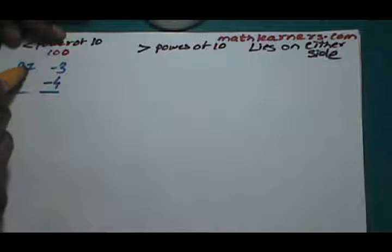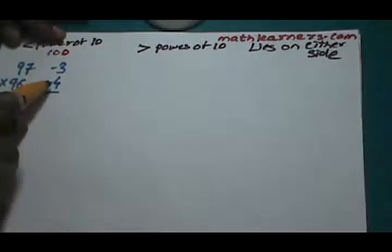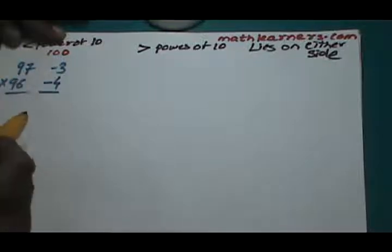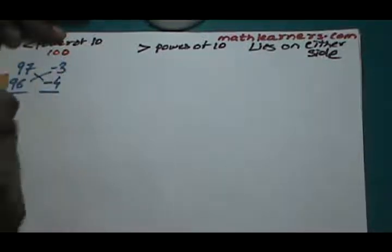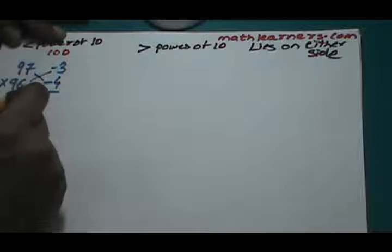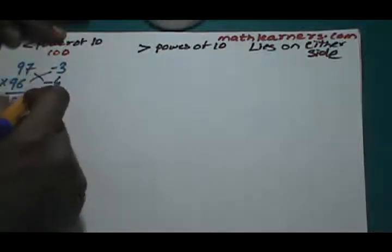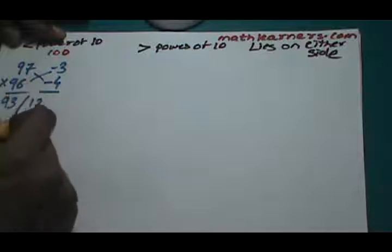We do cross addition of 97 and minus 4, or cross addition of 96 and minus 3. Either of them will give 93 slash, and we multiply right hand side. So that gives us 12. So this is your answer, 9312.